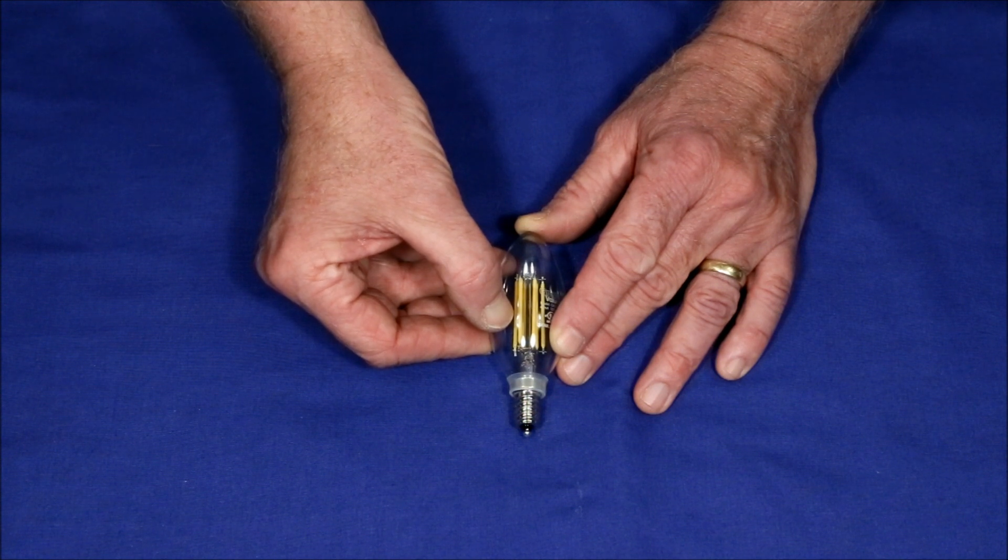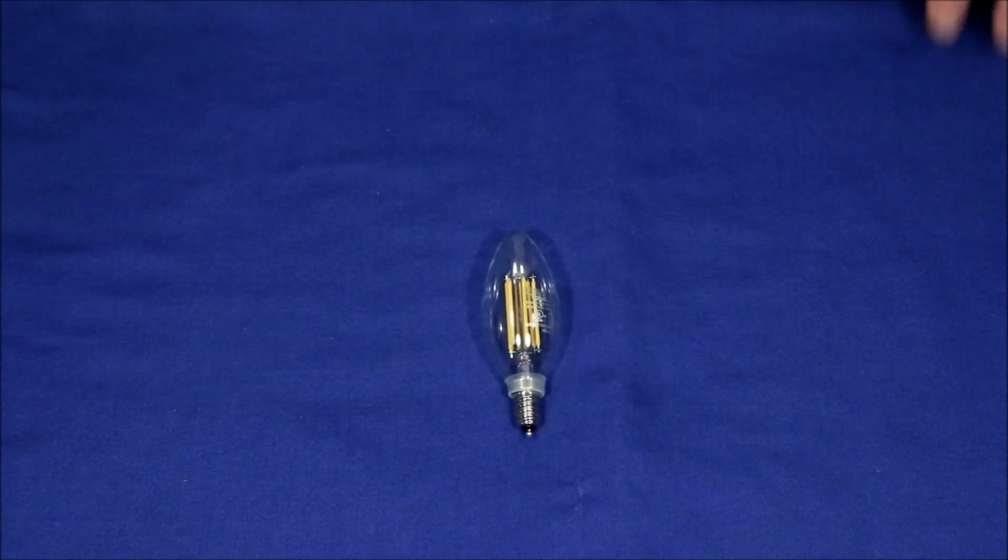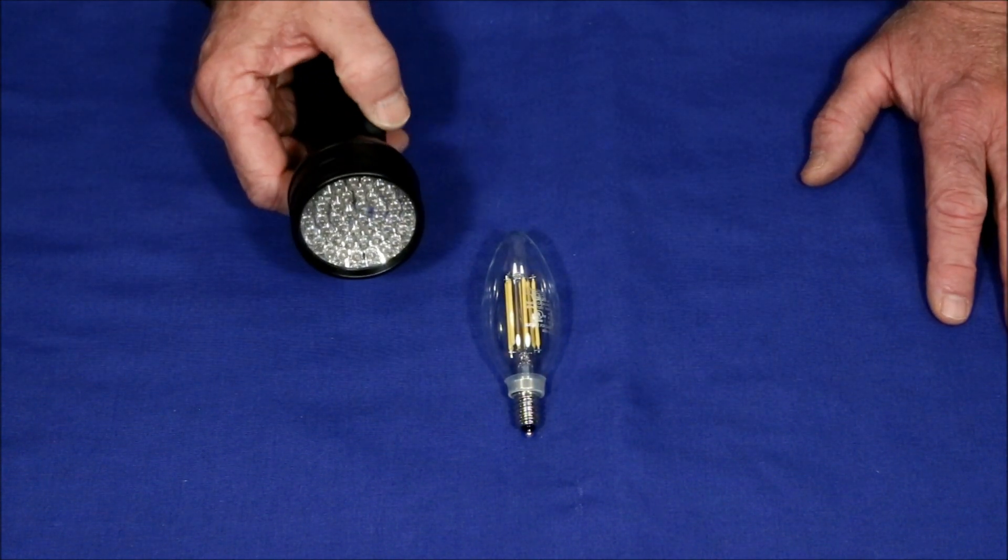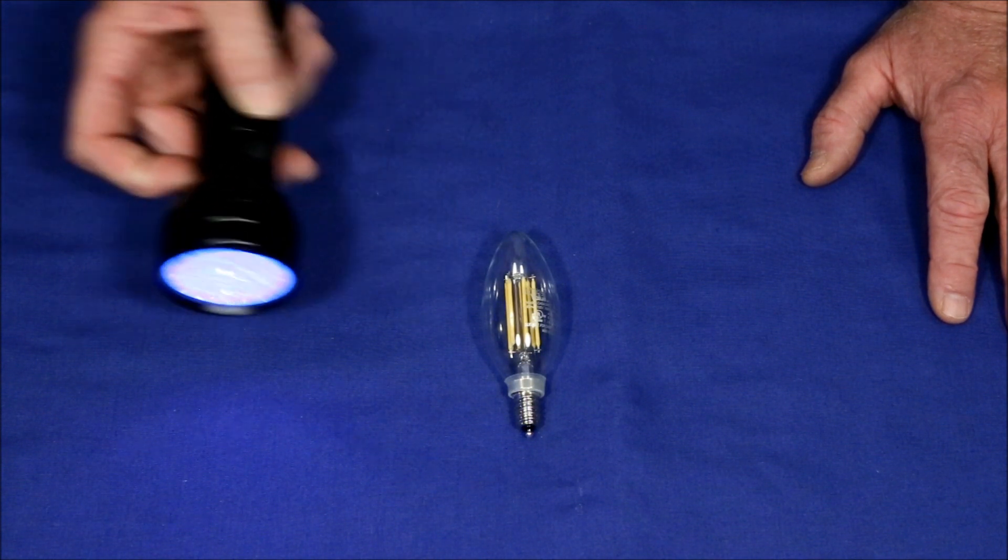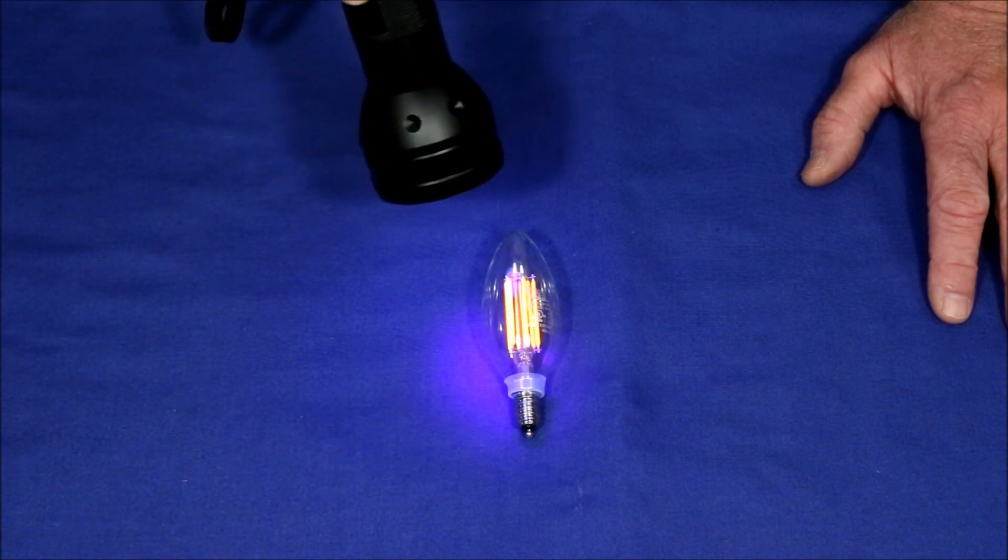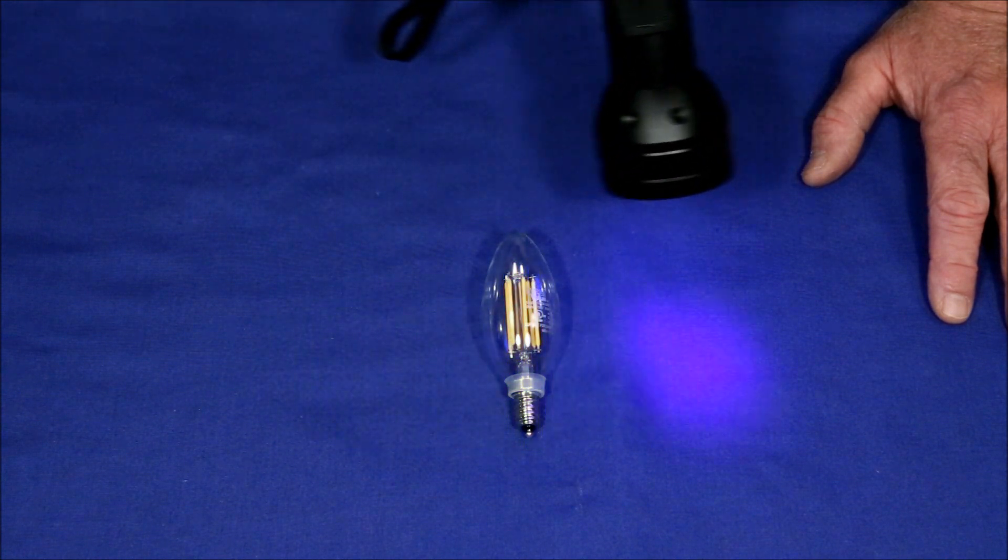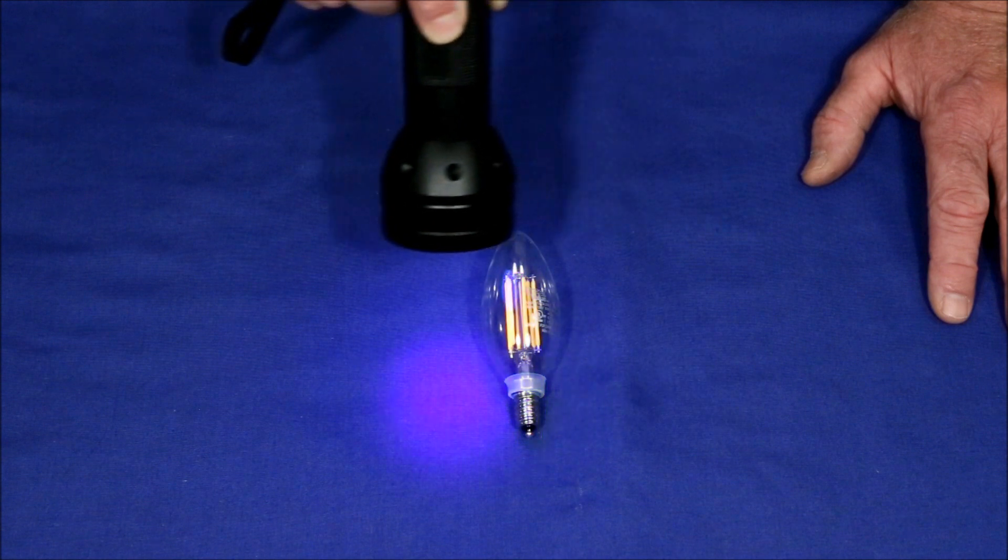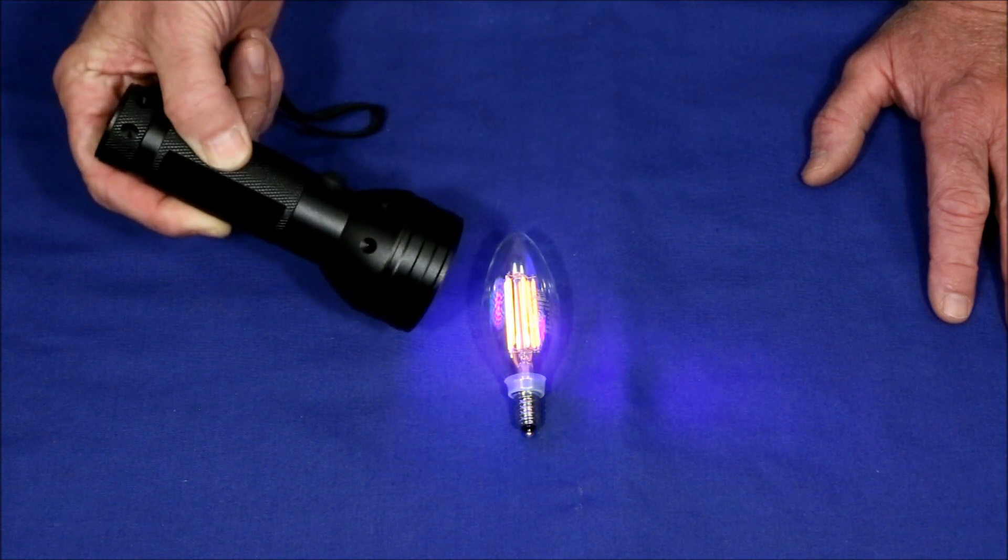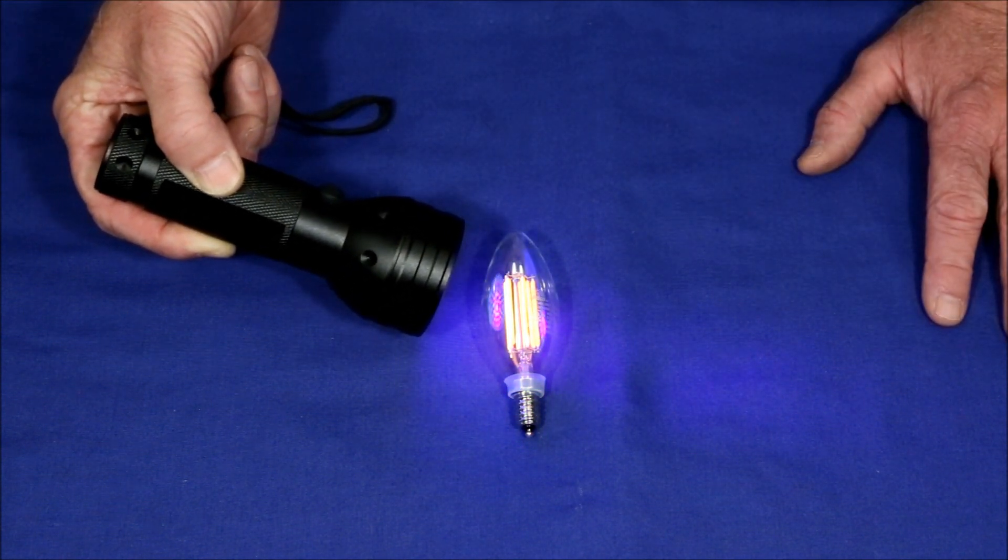In fact I can even show you how it works. If I take a fluorescent or black light flashlight, turn it on and shine it on those elements you can see that it makes them glow. And the only difference is when you plug it in and turn it on that the ultraviolet light is coming from the inside.